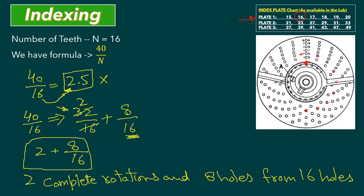Like this, you complete the gear manufacturing until you have all 16 teeth. So you always rotate 2 full turns of the crank, then advance 8 holes on the 16-hole circle, cut a tooth, and repeat from the new reference point until all teeth are done.